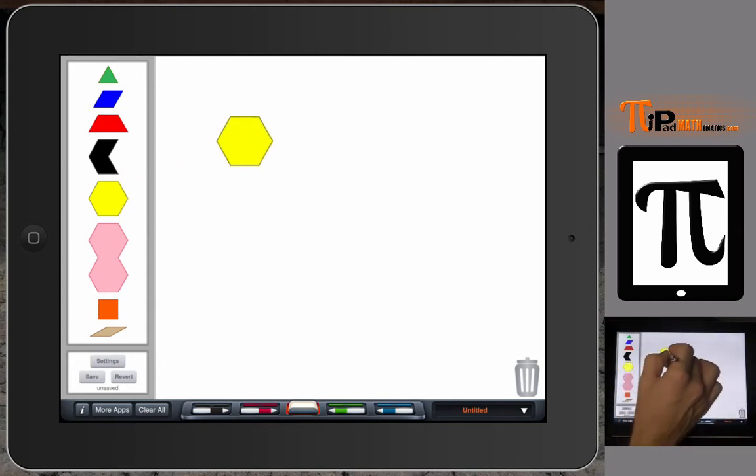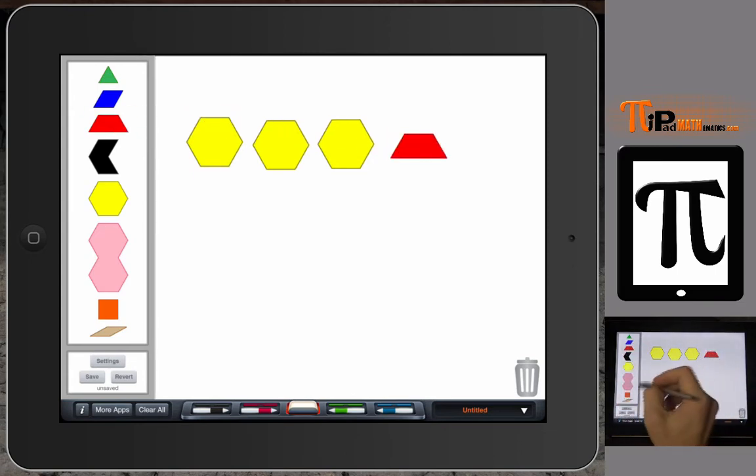We'll start off first by saying that this yellow hexagon is going to be our whole. So if this yellow hexagon is our whole, then I could put three of these out there and one trapezoid. Because the red trapezoid is one half of our whole, then we have three wholes and one half. So that's three and one half.